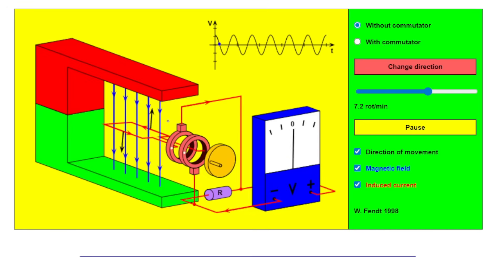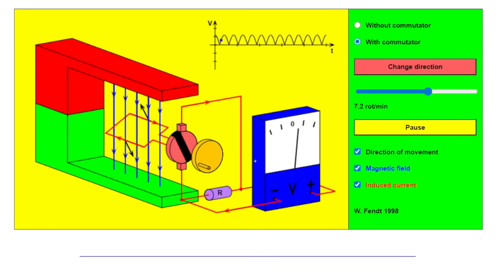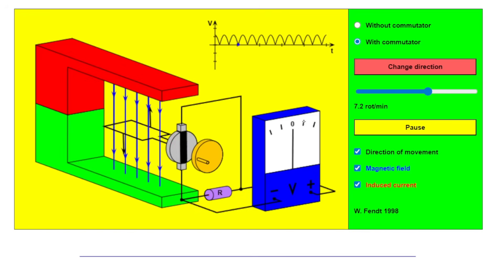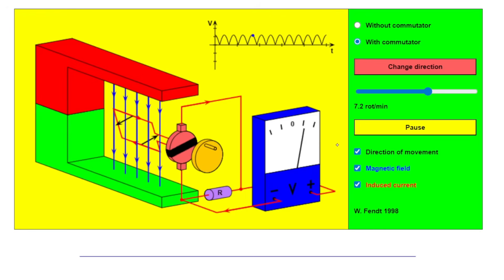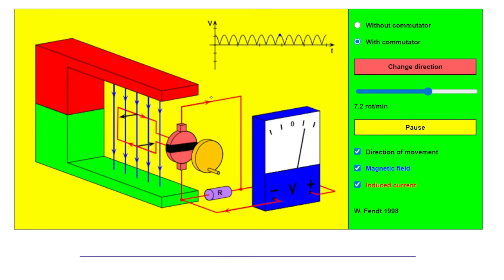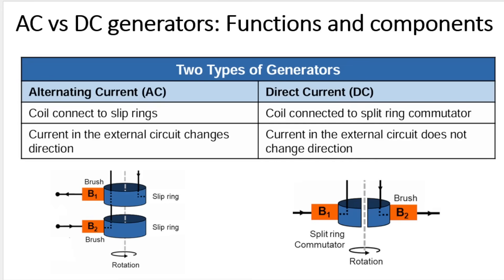If we replace the slip rings with a split ring commutator, take a look at the direction of the current in the external circuit and at the voltmeter — it goes to a minimum and then to a maximum, back to a minimum, back to a maximum, all in one direction. We can see that in the graph: minimum, zero, then to a maximum, but all in the same direction. The arrow in the external circuit is always pointing in one direction. This is known as direct current. So an AC generator uses slip rings and the current continuously changes direction, while a DC generator uses a split ring commutator and the current does not change direction.